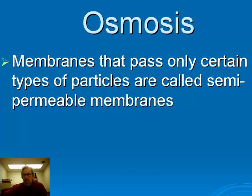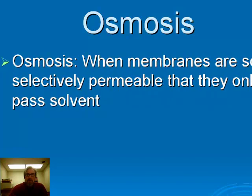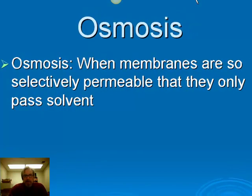Membranes that pass only certain types of particles — barriers that allow some particles to pass but others not — are called semi-permeable membranes. 'Semi' means half or part, and 'permeable' means it permits particles to come through, so semi-permeable means it partially permits only certain particles. Osmosis occurs when membranes only pass solvent particles, and solvent particles move from where concentration is low to where concentration is high, essentially trying to equalize concentration.